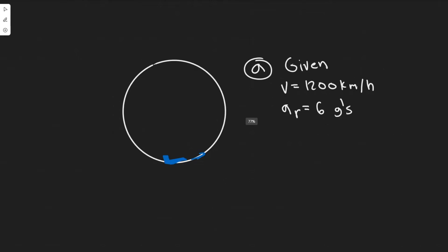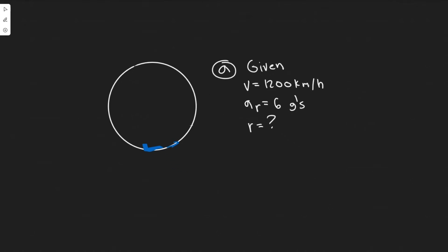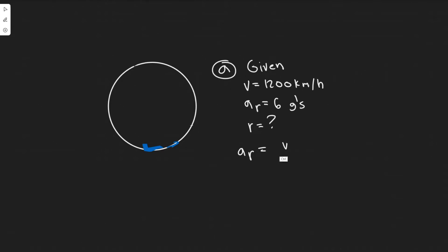We have a pilot going around in a circle. For part A, we're solving for the minimum radius, so r equals question mark. We're told the centripetal acceleration should not exceed six g's at the bottom of the loop, and the speed is 1200 kilometers per hour. To solve this, we use the formula for centripetal acceleration: a_r equals v squared divided by r.